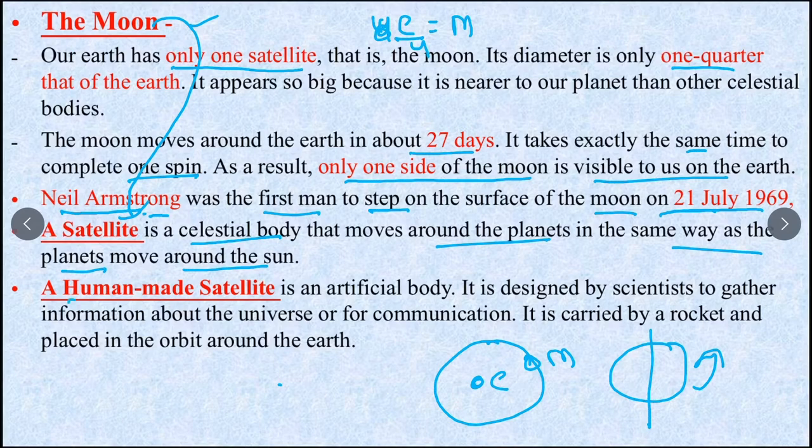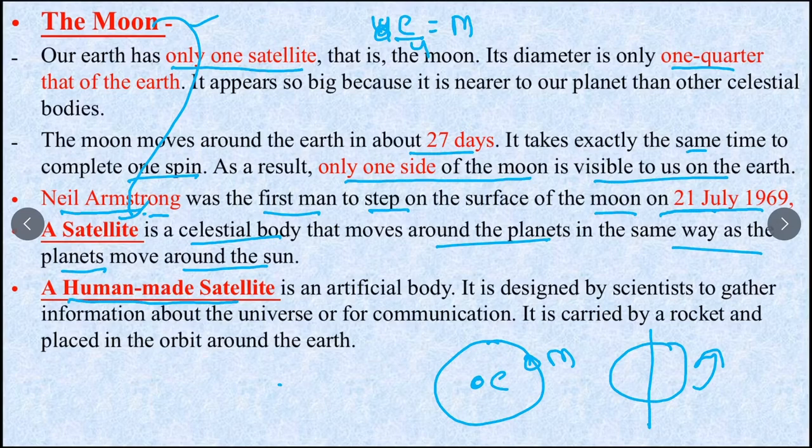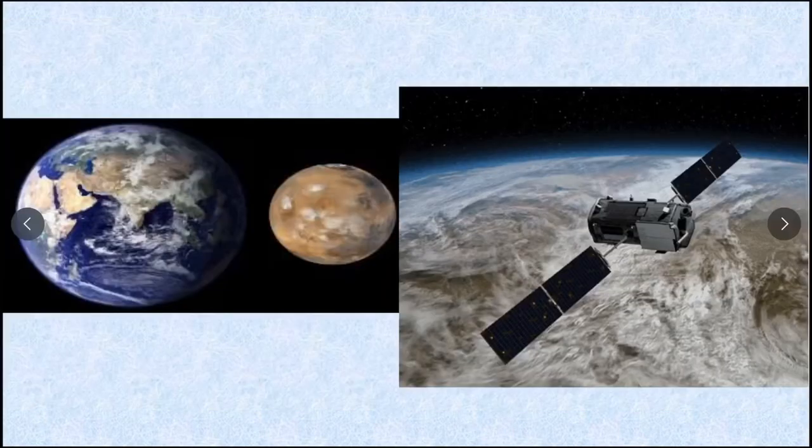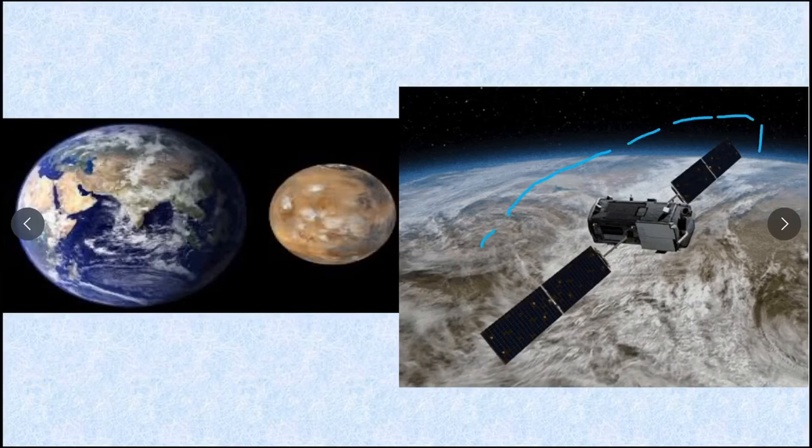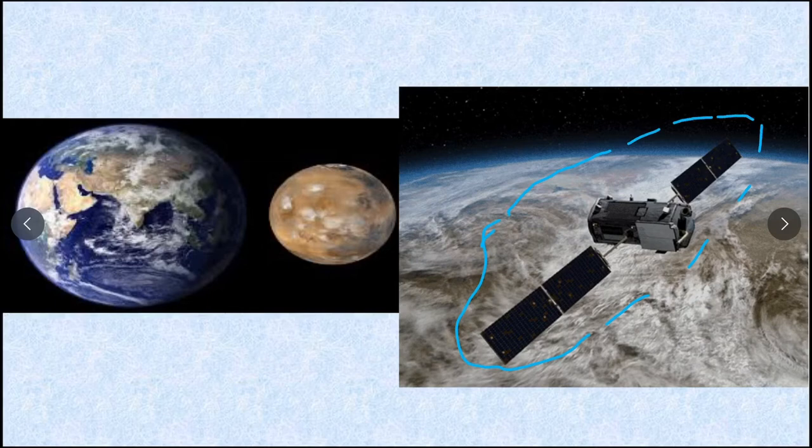What is human-made satellite? An artificial body designed by scientists to gather information about the universe or for communication. It is carried by a rocket and placed in orbit around the earth.